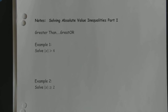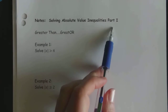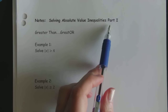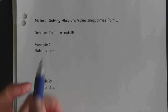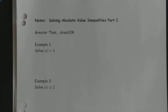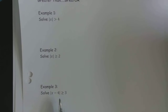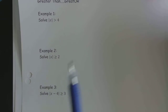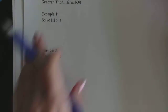Hi everyone, and thanks for tuning in to our next video in Unit 4: solving absolute value inequalities. I'm going to call this Part 1, because there are two distinct types of inequalities — you either have the greater than or greater than or equal to situation, or you have less than. I'll address those two different inequalities in two different videos. In the examples today, we have all greater than and greater than or equal to in our three examples.